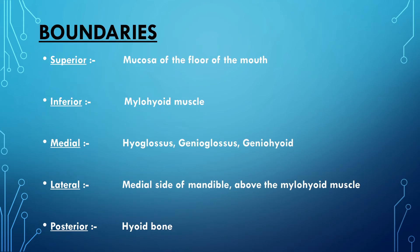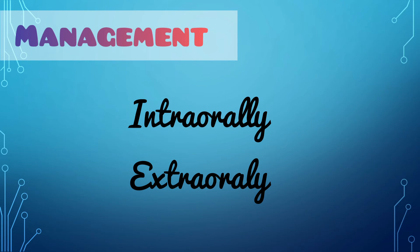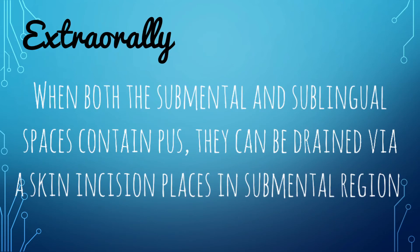The boundaries of the sublingual space include superior, inferior, medial, lateral, and posterior. Superiorly, the sublingual space is bounded by the mucosa of the floor of the mouth; inferiorly by the mylohyoid muscle; medially by the hyoglossus, genioglossus, and geniohyoid muscles; laterally by the medial side of the mandible above the mylohyoid muscle; and posteriorly by the hyoid bone. Management is incision and drainage, done intraorally or extraorally. When both submental and sublingual spaces contain pus, they can be drained via a skin incision in the submental region.